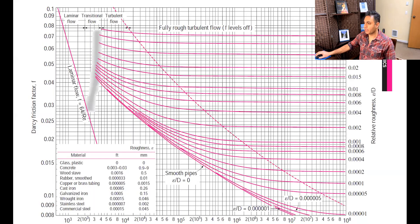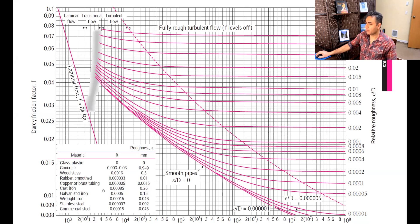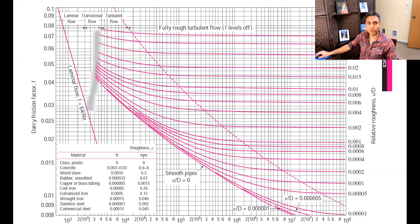Here's the Moody chart. Yes, this is for internal flow, and the problem we're solving is external flow, so we don't care about the Moody chart itself — but we can find the values of epsilon from it. Look at cast iron: the roughness epsilon is 0.26 millimeters. Remember, this is not 0.26 meters — that would be crazy. It's a very common problem: students forget to convert millimeters to meters and get crazy numbers. So keep in mind that epsilon for cast iron is 0.26 millimeters.